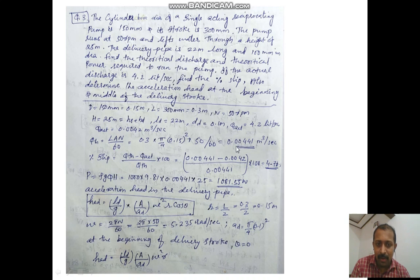Next is the percentage slip. For that we have the equation: Q theoretical minus Q actual, divided by Q theoretical, times 100. We know all these values, and substituting here we'll get 4.76 percent.